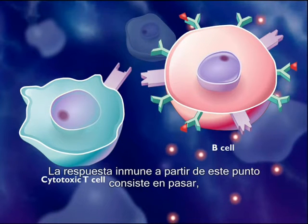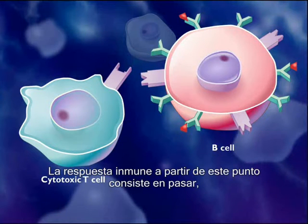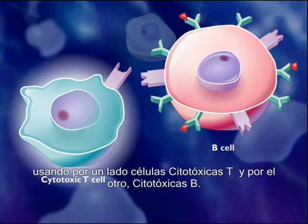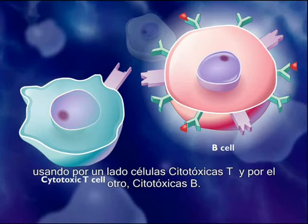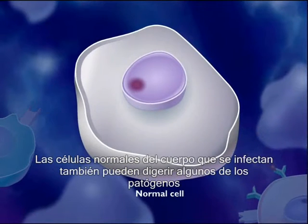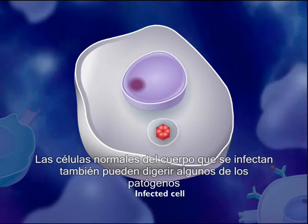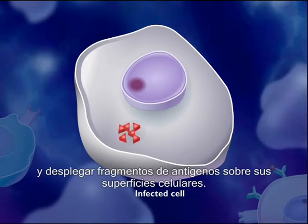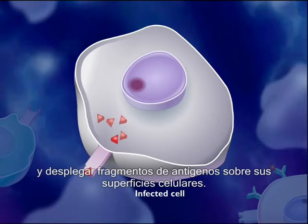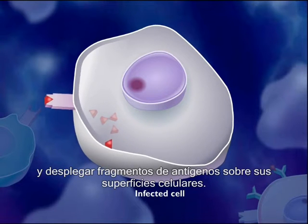The immune response from this point follows two paths, one using cytotoxic T-cells and one using B-cells. Normal cells of the body that become infected can also digest some of the pathogens and display antigen fragments on their cell surfaces.